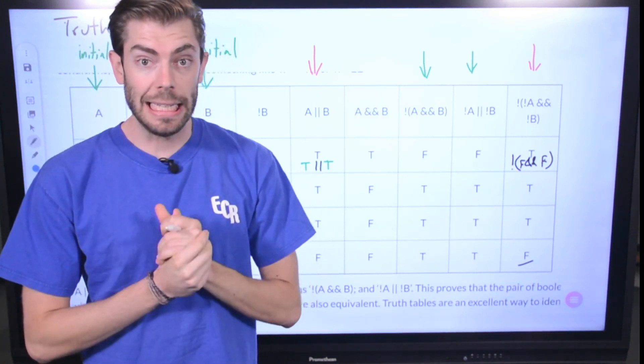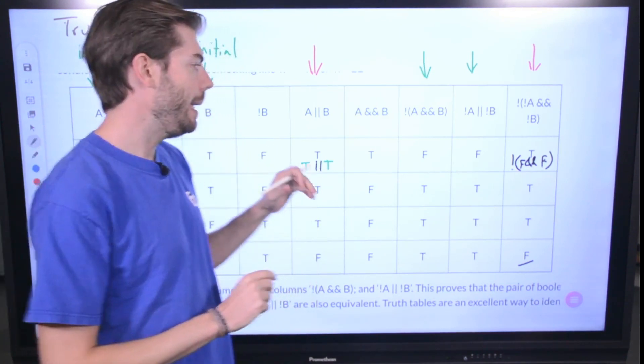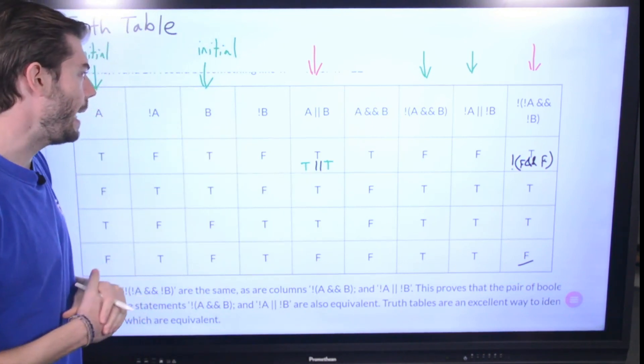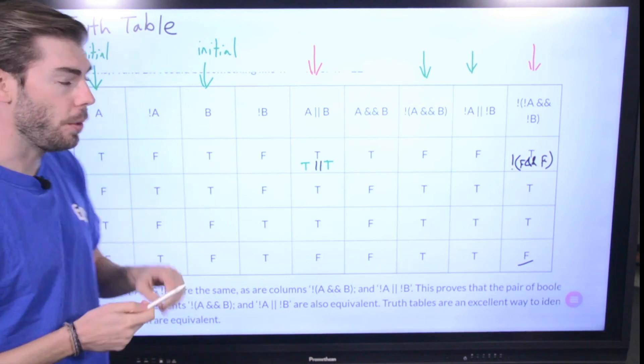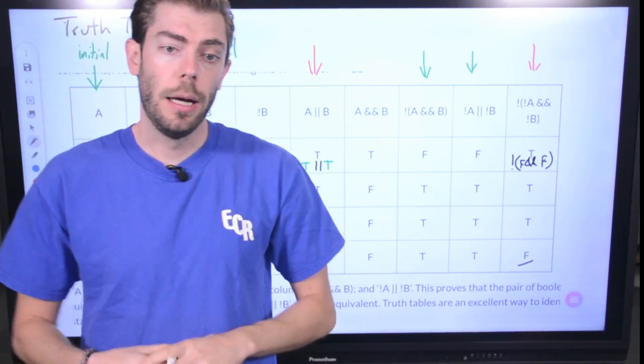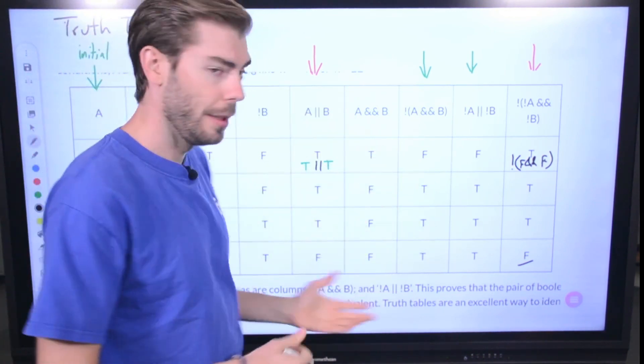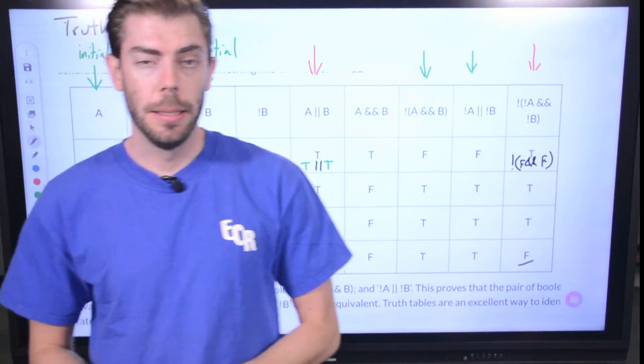Okay, so that is truth tables, a way to evaluate and look at how our relationships of NOTs, ANDs and ORs give us different outcomes based on certain initial states of A and B.